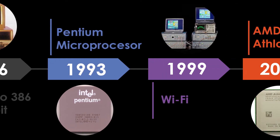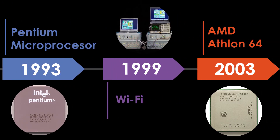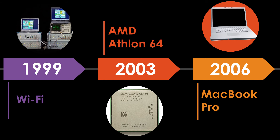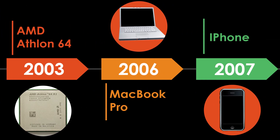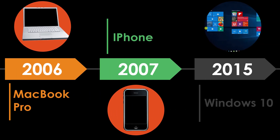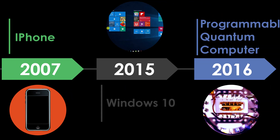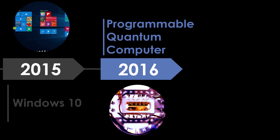In 1986, Compaq brings the Desktop Pro 386 with 32-bit architecture. In 1993, the Pentium microprocessor advances the use of graphics and music. In 1999, Wi-Fi is introduced. In 2003, the first 64-bit processor, the AMD Athlon 64, is introduced. In 2006, Apple introduces the MacBook Pro, the first Intel-based dual-core mobile computer. In 2007, the iPhone brings main computer functions into a smartphone. In 2015, Microsoft Windows 10 is released. In 2016, the first reprogrammable quantum computer was created.